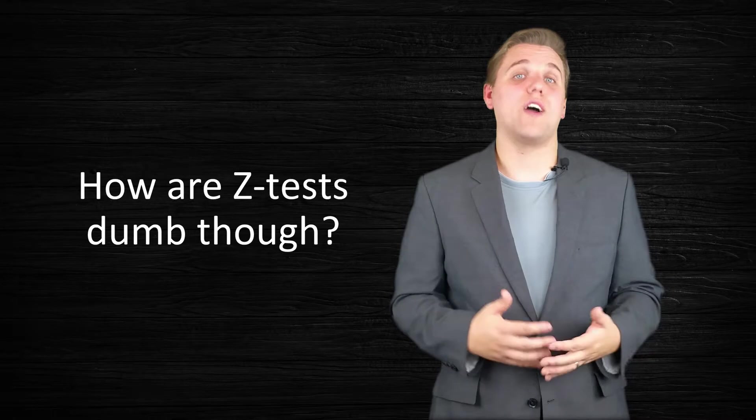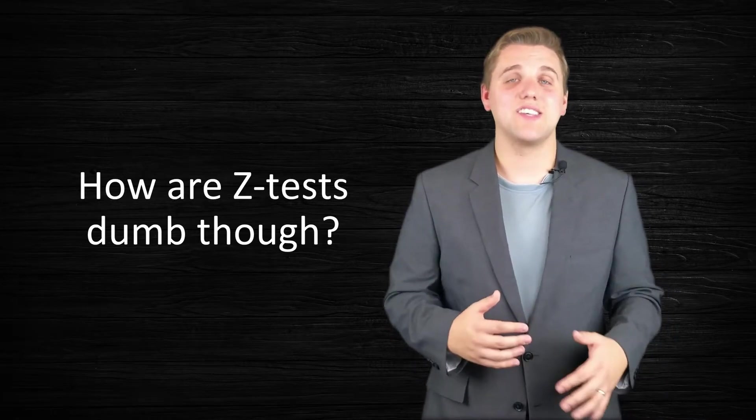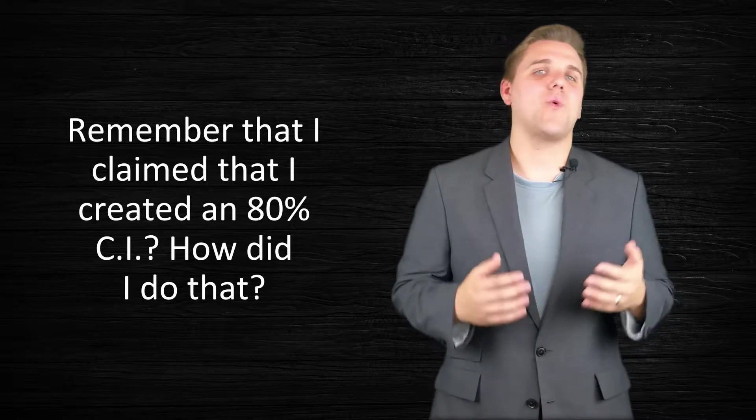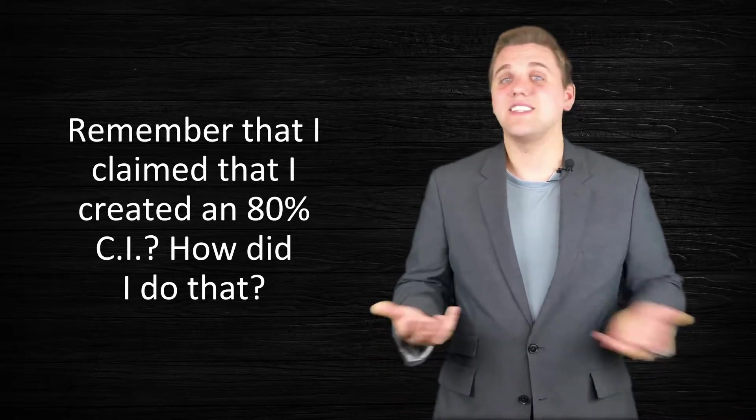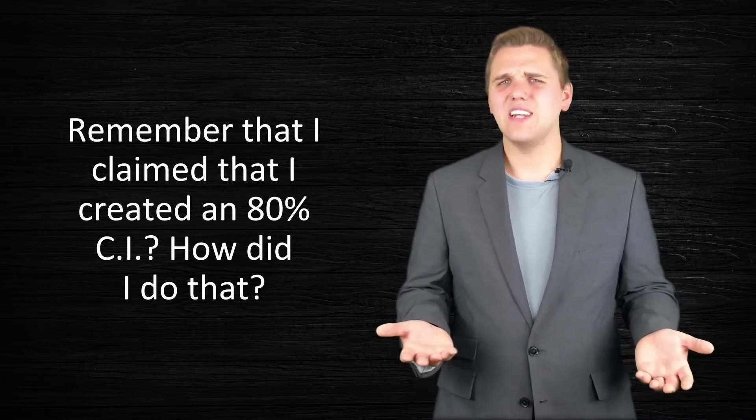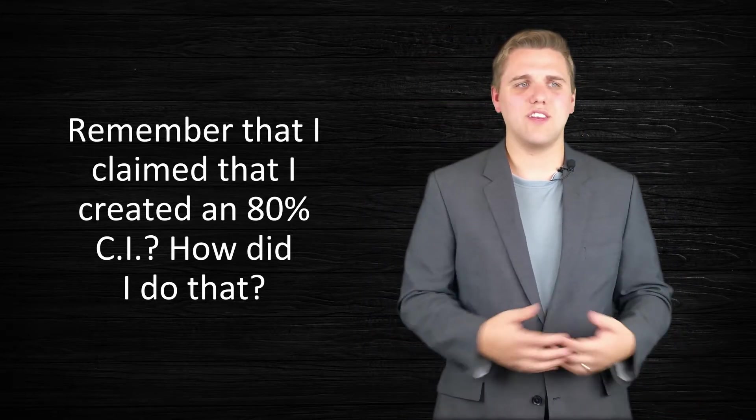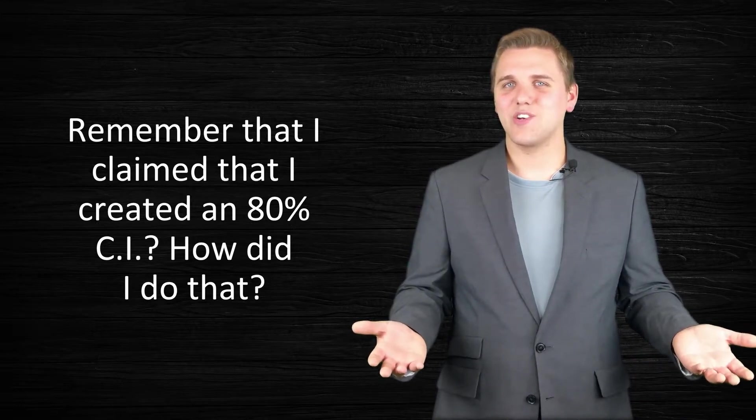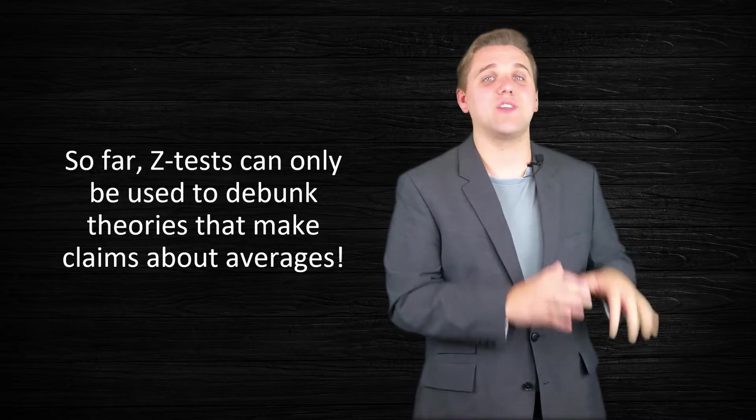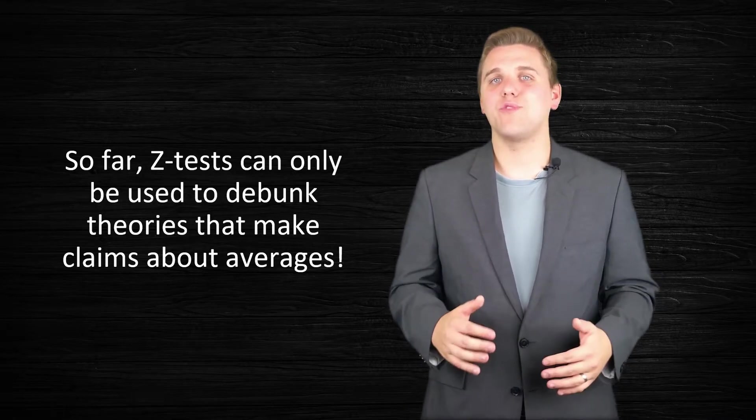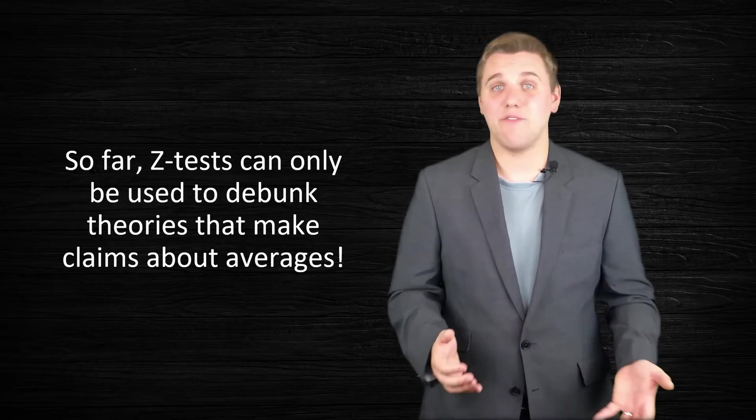Now, there's going to be this lingering question throughout the next several lectures. Earlier, I mentioned that Z-tests are not really effective. So, why are Z-tests dumb? Now, here's a hint as to why Z-tests are ineffective. Remember earlier when I mentioned that I did some math and constructed an 80% confidence interval? How did I do that? I mean, I sampled 1,000 Apple users and calculated this age and calculated this confidence interval. How did I create that confidence interval? Now, we'll actually address those questions in the next couple lectures. But I also want to foreshadow something else. So far, Z-tests are really only useful for debunking theories that make claims about averages. So, what about, like, proportions? Anyways, those questions will all be addressed in the upcoming lectures. So, I'll see you guys then.